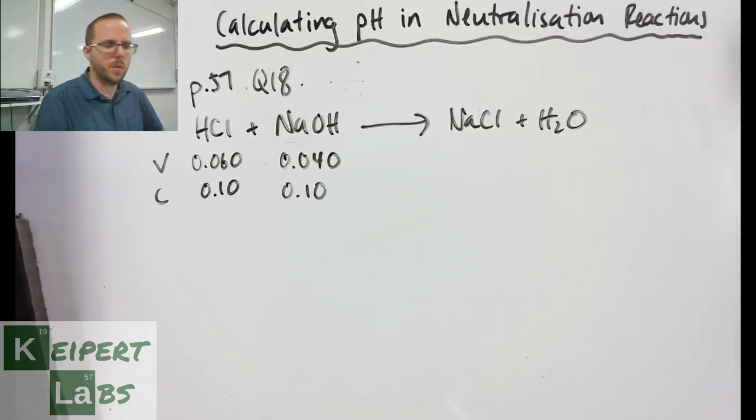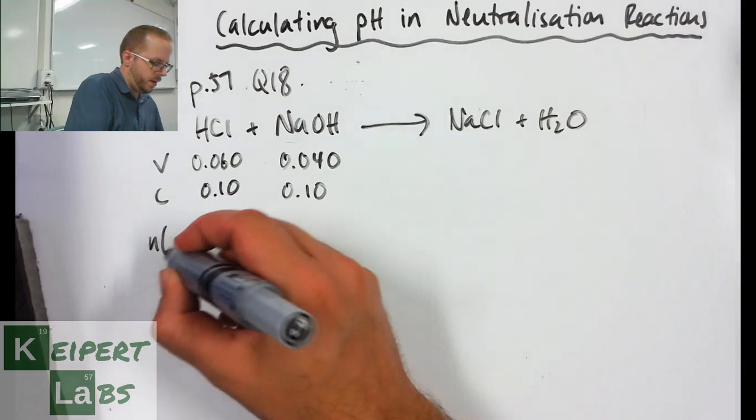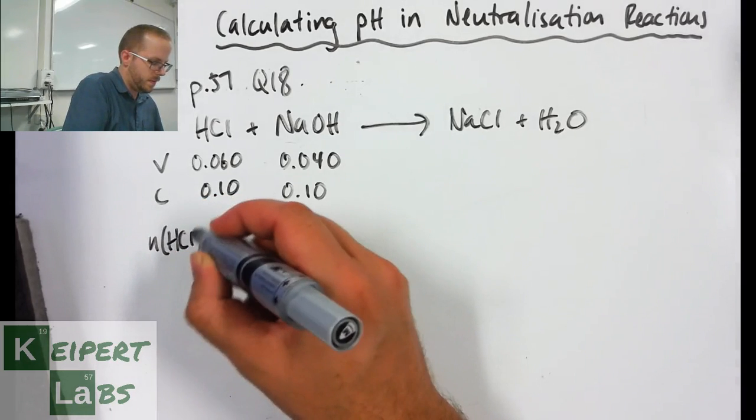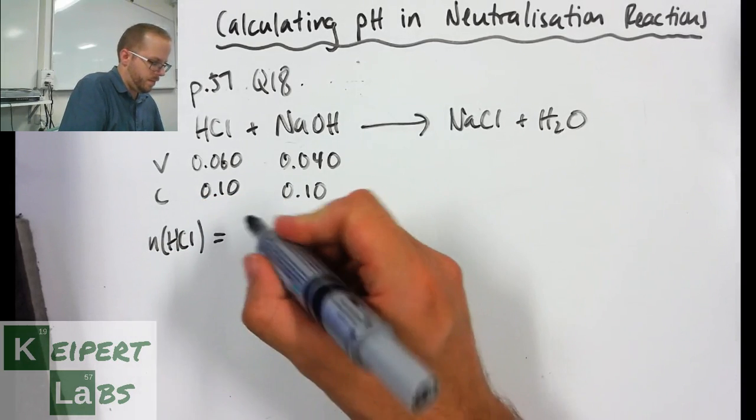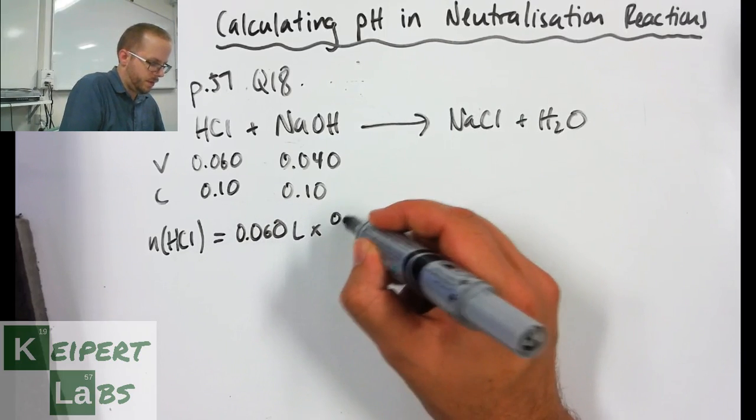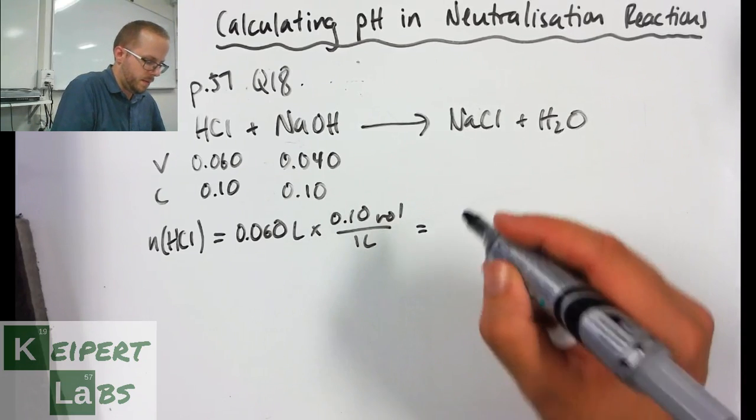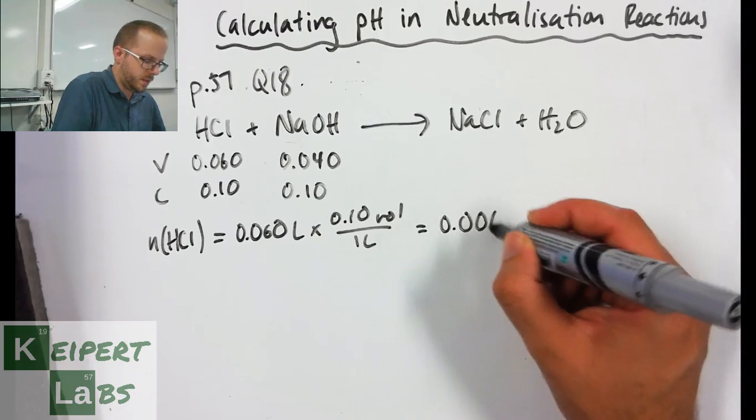So we've got to work out the moles of our hydrochloric acid. We get 60 mL volume, 0.10 moles per litre for every 1 litre which gives us 0.006 moles.